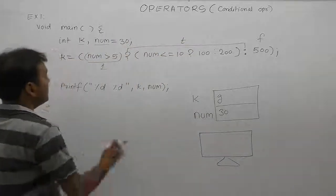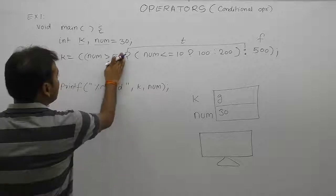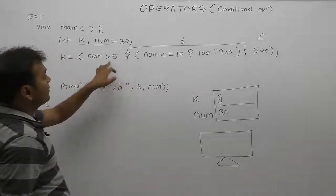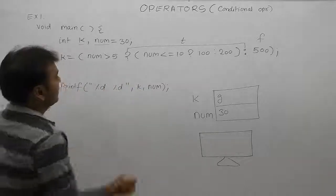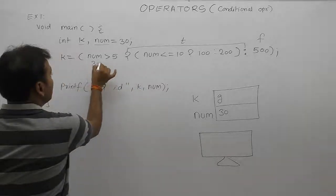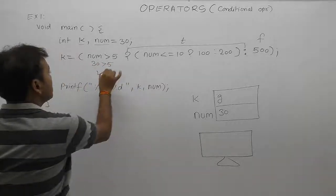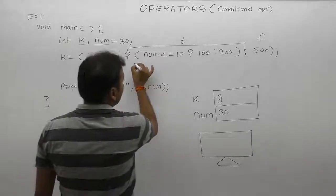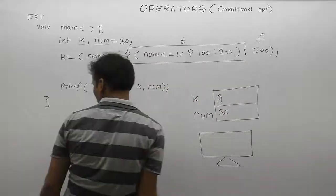First, we'll test the outer conditional operator. We identify the type of the condition: what is the value of num? Num is 30. In that case, 30 greater than 5 condition is true. When the condition is true, the true session is going to be executed.